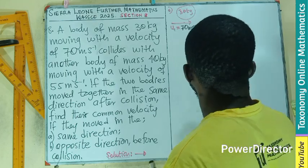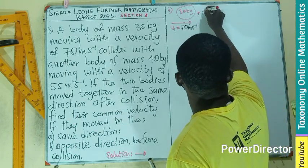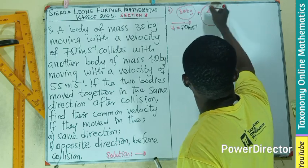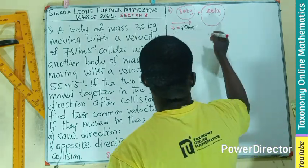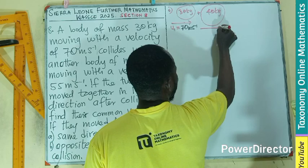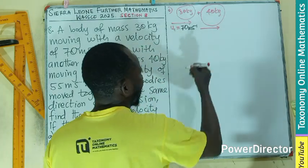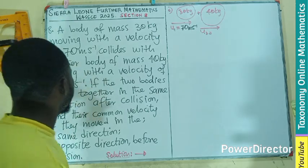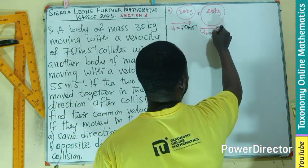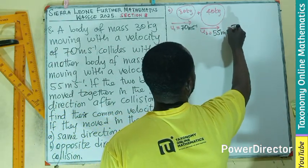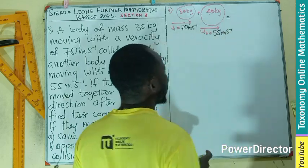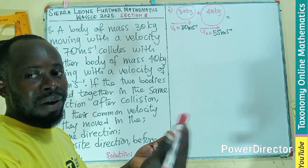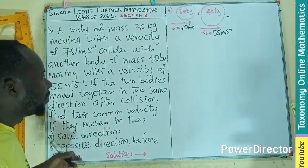And the second body, which is also 40 kg. This will be a lot bigger than the first one. Also moving with a velocity of U2, which is also 55 m per second. So after collision, they are all moving in the same direction. The first part of it. Same direction.